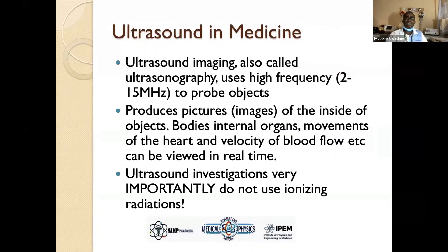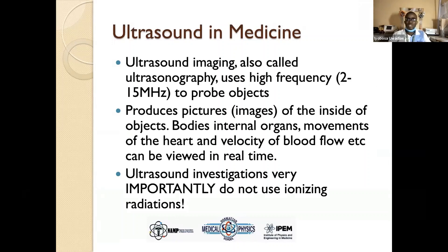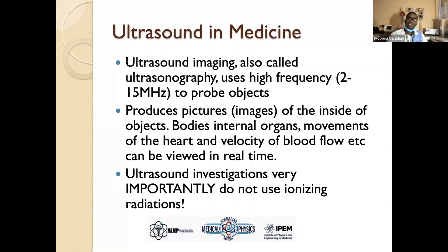Ultrasound in medicine — we can also call it ultrasonography — uses a very high frequency from 2 MHz to 15 MHz to probe objects. It produces images of the inside of objects: internal organs, the movement of the heart, the velocity of blood, and so many things, which can be viewed in real time. Ultrasound investigation, very importantly, does not use ionizing radiation — unlike CT, mammography, and so many others.